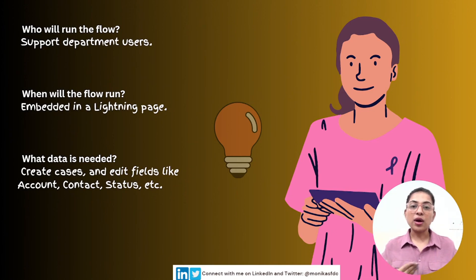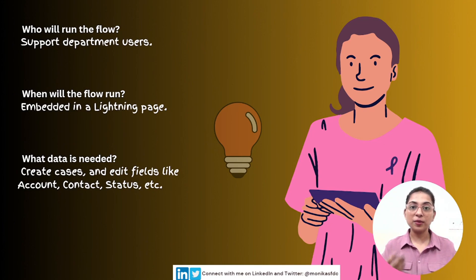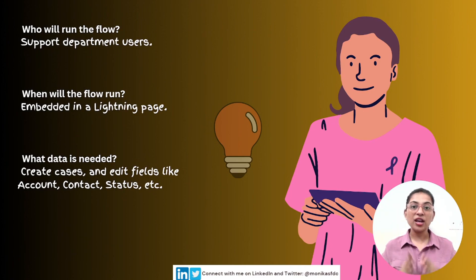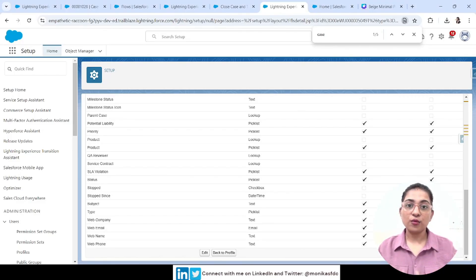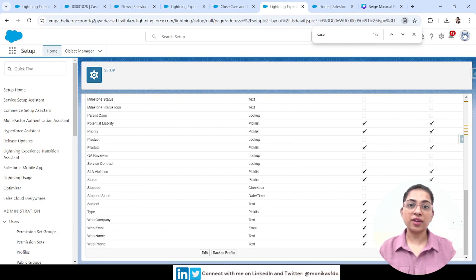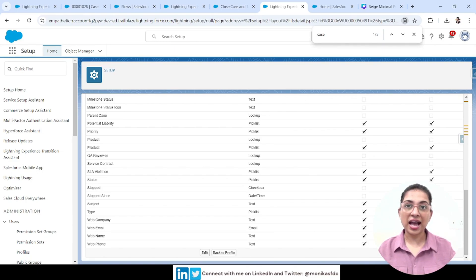Third and most important: what data is actually needed to get the flow running successfully? For example, if the flow creates or updates case fields, we need Create Case permission and field-level permissions for those specific fields used in the Create Case element. Keep these in mind before and while creating a flow — asking these questions of yourself, your business, or your senior developer will be really valuable.